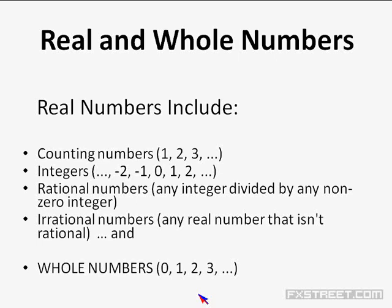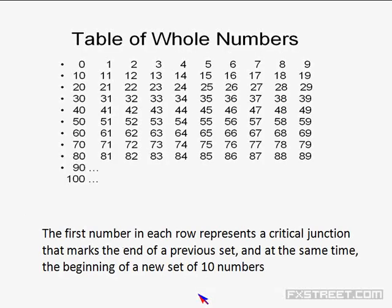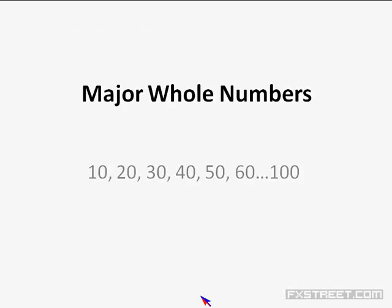Real numbers include counting numbers, integers, rational numbers, irrational numbers, and most importantly for the Quarters Theory, the so-called whole numbers: 0, 1, 2, 3, and so forth. When a trader looks at a table of whole numbers and especially at the first number in each row, those numbers have a special significance — they represent a critical junction marking the end of a previous set and the beginning of a new set of 10 numbers. I call these major whole numbers: 10, 20, 30, 40, 50, and so forth.